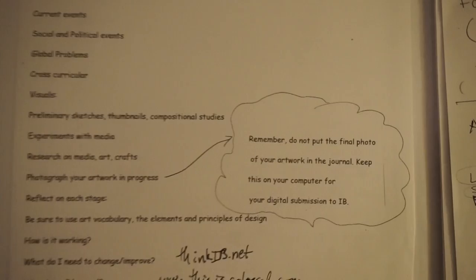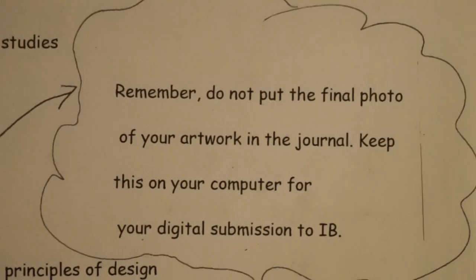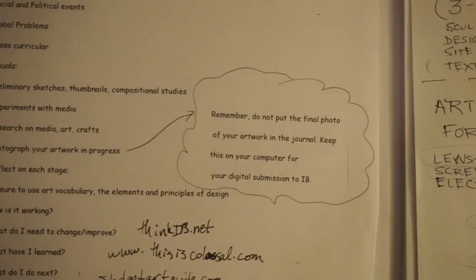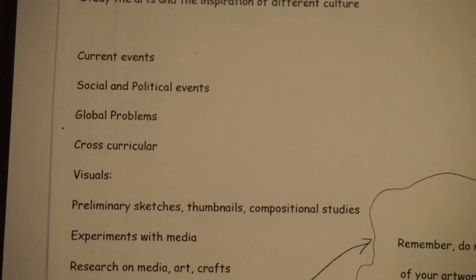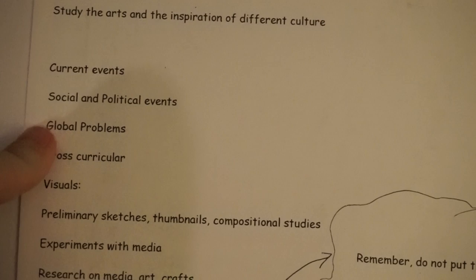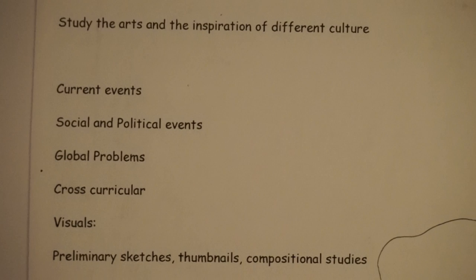There's also a lovely list of other things you could include. This is an important one: do not put the final picture of your art in your journal. I can't stress that enough — IB will hate you forever if you do. Other things you can include are current events, social and political events, and global problems — all things that would influence your work.